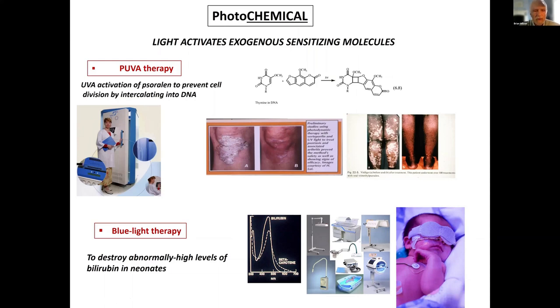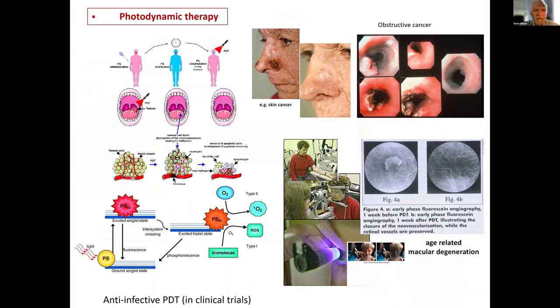Photodynamic therapy, which is an area that Stefan and I have worked in for a long time. Again, you use a drug, a photosensitizer, that undergoes some photophysical transformation in absorbing light and produces molecules, either excited singlet oxygen or other molecules that can kill cells. This is used, for example, in treating cancer and also for ophthalmological conditions.